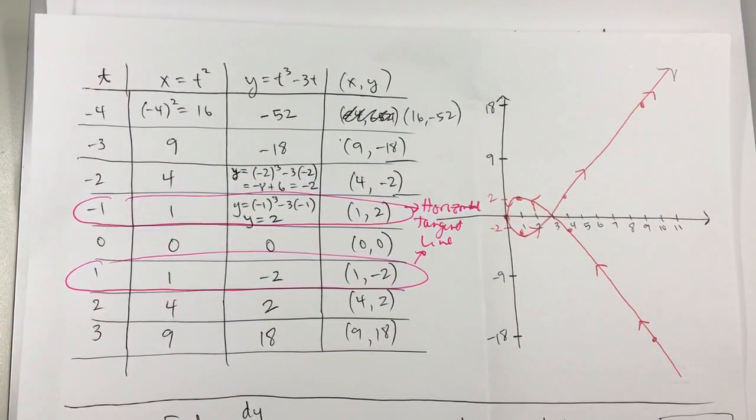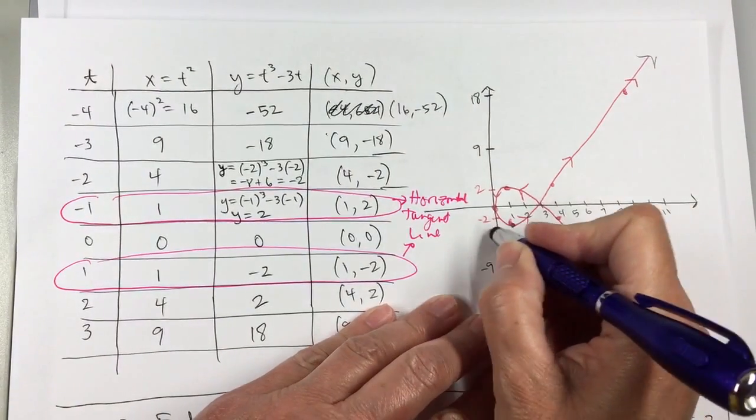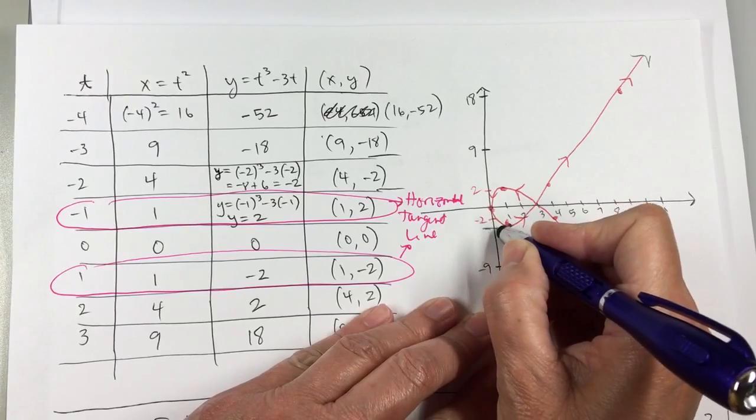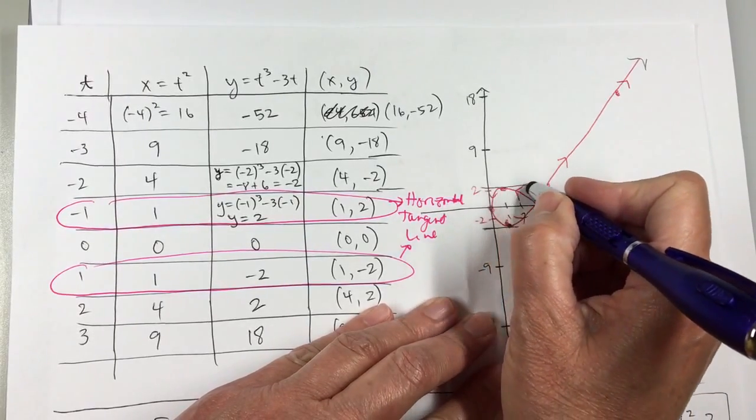So on the graph, now on my graph, I actually looks like my horizontal tangent line is elsewhere. And I kind of did that on purpose because I didn't want to come in here and thinking, well, I know exactly where it is. But here's a horizontal tangent line. And here's a horizontal tangent line.